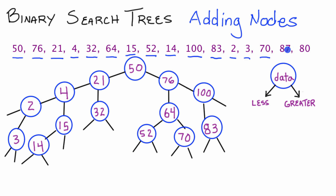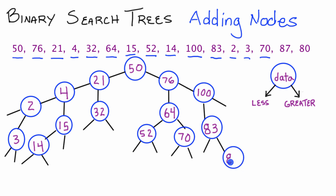Next we add 87. 87 is greater than 50, take the right pointer. Greater than 76, so we take the right pointer. Less than 100, so we take the left pointer. Finally, greater than 83, we take the right pointer, and add node 87 there. So there's node 87.